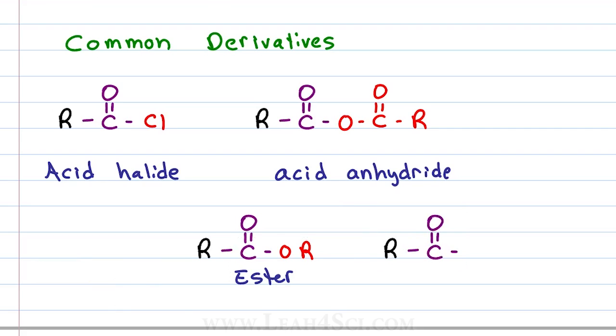And if I replace the OH with a nitrogen, for example NH2 or we can have NHR or NR2, these are just different substituted nitrogens, we get what's called an amide.